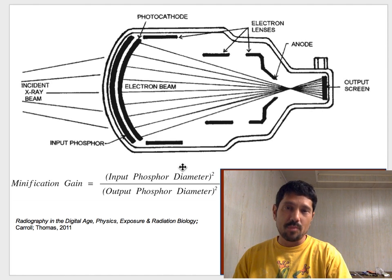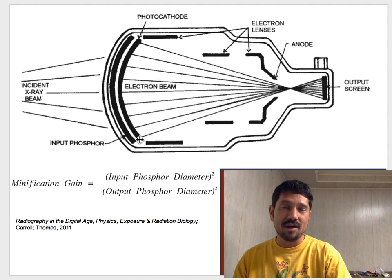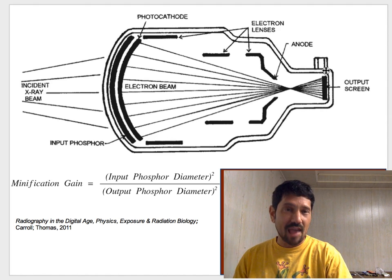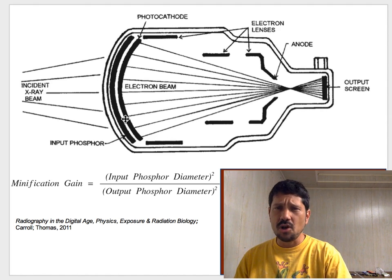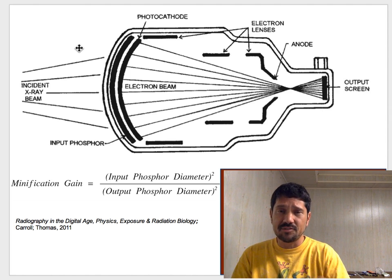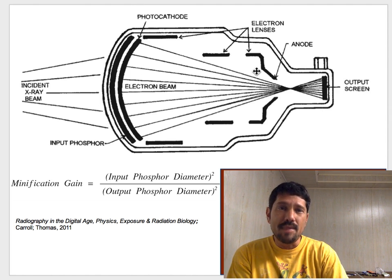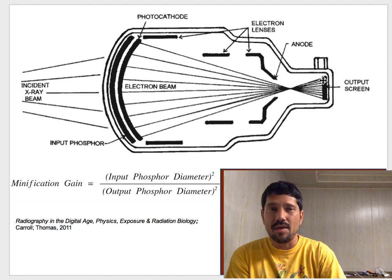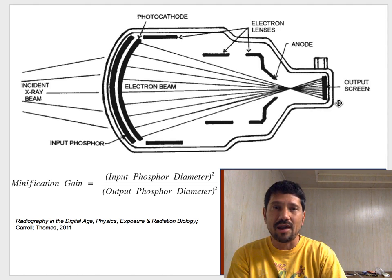And the minification gain will be based on the diameter of the input phosphor divided by the diameter of the output phosphor. So a lot of image intensifiers have 9-inch or 12-inch input phosphors, and then they minify the image because they've got to focus it onto a smaller area.